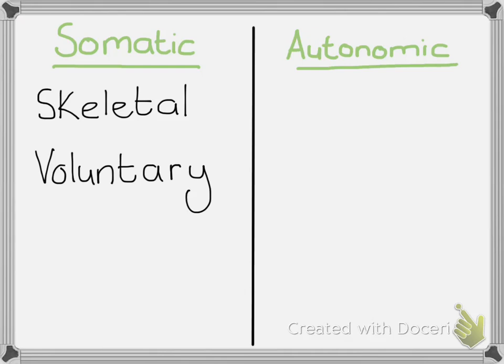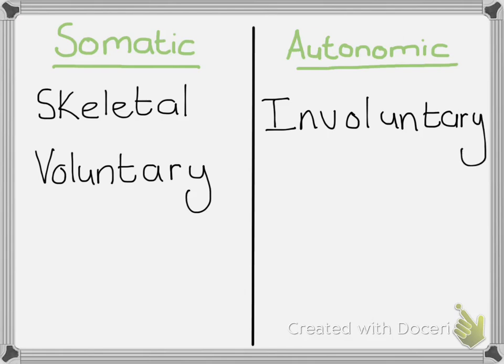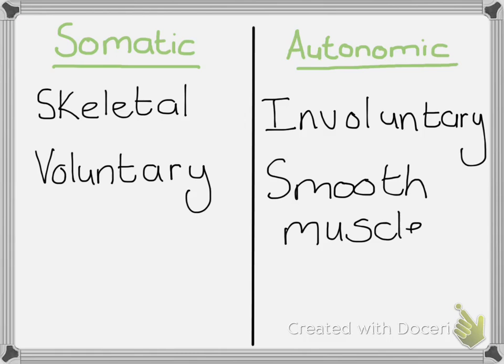On the other side, we have the autonomic nervous system. Think of this as the system responsible for all of your involuntary movements — actions you don't need to think about; they happen on their own. Your body has its own way of mediating how it functions. The autonomic system is responsible for your smooth muscles, as opposed to your skeletal muscles, and also for things like your glands and their secretions.